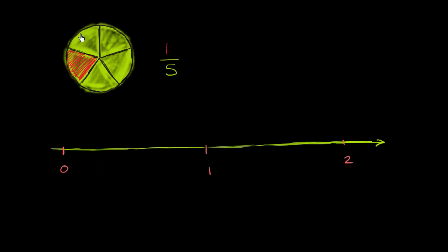And of course, we could keep going if we had more space to 3, 4, and on and on. And what I want to do, instead of taking a circle and dividing it into five equal sections, I want to take the section of our number line between 0 and 1 and divide it into five equal sections.